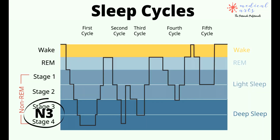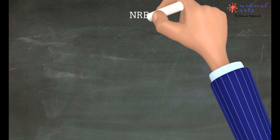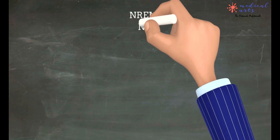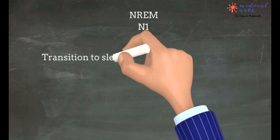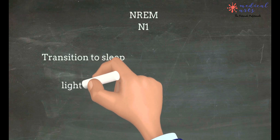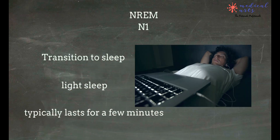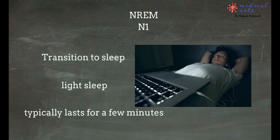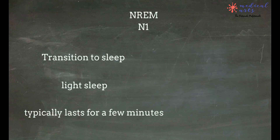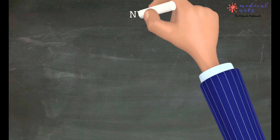Non-rapid eye movement sleep is divided into three substages: stage N1, stage N2, and stage N3. Stage N1 is the typical transition from wakefulness to sleep. Eye movements are typically slow and rolling — it is the lightest stage of sleep. Patients awakened from it usually do not perceive that they were asleep. This stage lasts for a few minutes.